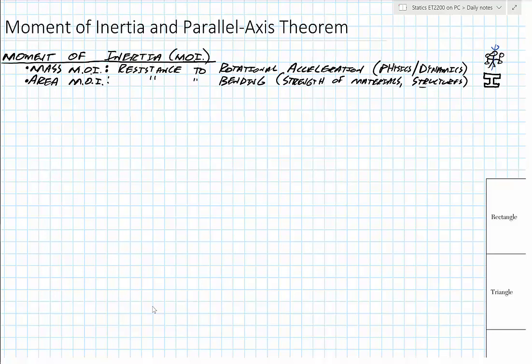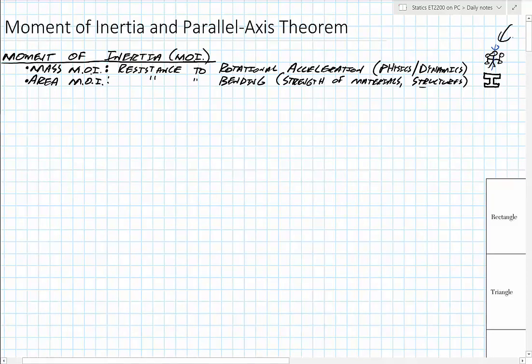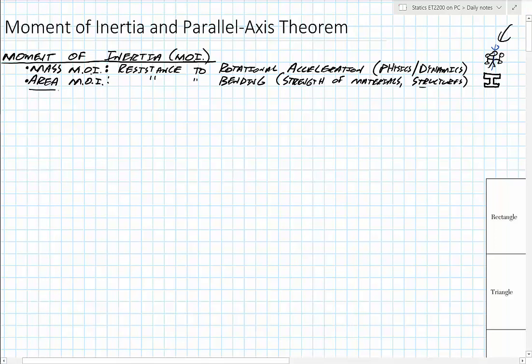Conservation of angular momentum plays into this as well. A classic example would be a guy holding weights and spinning on a chair — he pulls in the weights and he spins really fast. Or a figure skater. But that's not what we're going to be talking about here. That's the mass moment of inertia. Instead, what we're going to be looking at is the area moment of inertia.